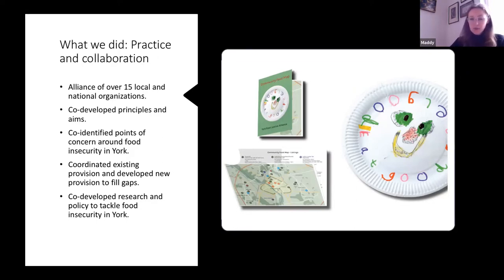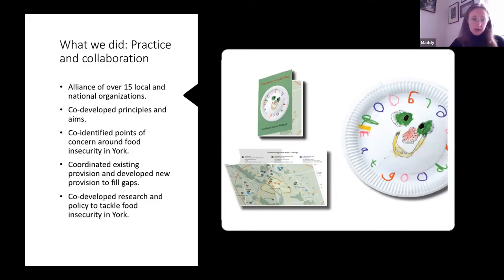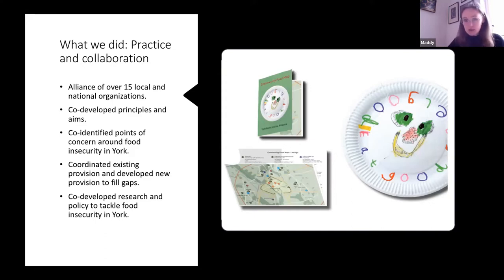In doing that mapping, we identified gaps — both geographic, like areas of the city with no provision, and demographic, like not enough provision for parents or for men who were homeless. There was a particular area with a lack of provision, so we came together and set up a new community cafe called the Red Tower Café, which proved immensely successful and has really expanded. We were very conscious about making all new provision as non-stigmatising as possible — open access, no means test, no referral system, and with hours as flexible as possible.